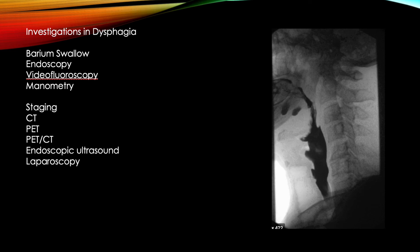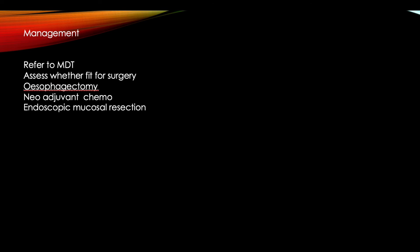For staging if cancer is found, you have CT, PET-CT, PET, and endoscopic ultrasound. We refer to the MDT, who need to assess whether the patient is fit for surgery. That decision uses all available information: patient fitness, cancer stage, cancer type, and spread. If fit, options include esophagectomy, neoadjuvant chemotherapy, or endoscopic mucosal resection. Many of these patients may not be fit for surgery.